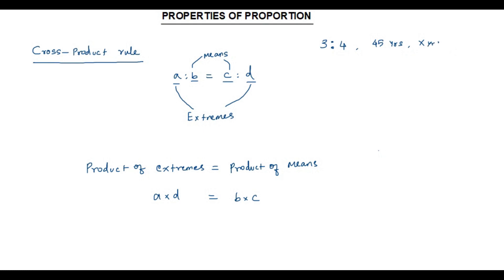I assume the age of the second person is X years. Using the ages 45 years and X years, we can write the ratio as 45 is to X. This is the ratio between the ages of two persons, but already the ratio between their ages is given as 3 is to 4. Both ratios 45 is to X and 3 is to 4 mean the same thing, so we can equate them. Now two ratios are equal, so it has become a proportion.